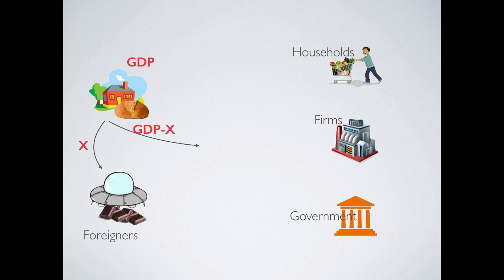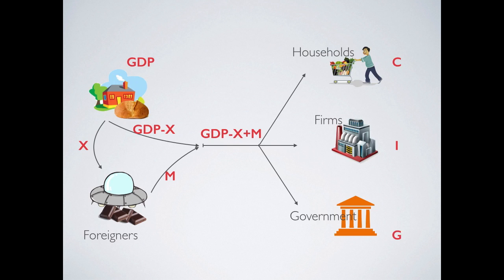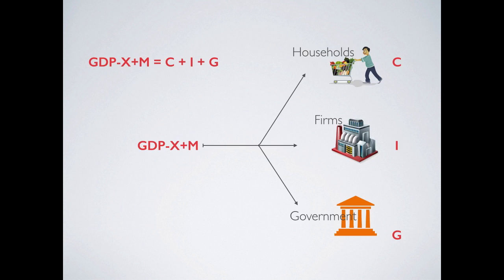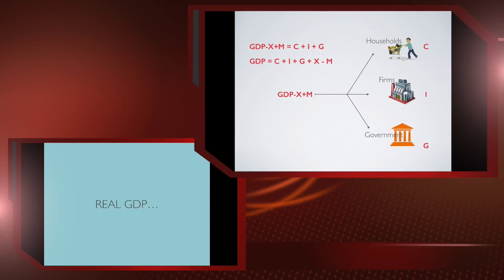Those three agents — households, firms, and government — can purchase not only locally produced goods but also goods produced by foreigners, denoted as M, which we call imports. Therefore, the total amount of goods that domestic households, firms, and government can consume is GDP minus X plus M. When it goes to consumers or households, we use the notation C. For the part that goes to firms, we use I and call it investment. For the part that goes to government, we call it G, government expenditure. Therefore, GDP minus X plus M equals C plus I plus G, or more commonly: GDP = C + I + G + X − M.